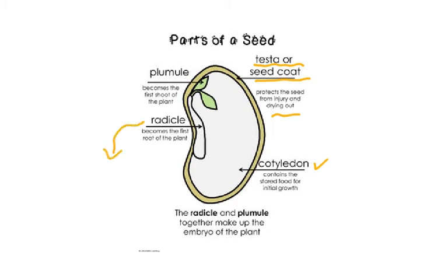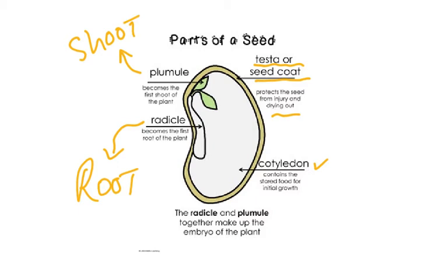A simple way to remember: the radicle is going to develop into the root — 'r' for radicle, 'r' for root. The plumule is going to become the shoot. The three main components are: number one, the testa or seed coat; number two, the cotyledons; and number three, the radicle. The radicle and the plumule together make up the embryo of the plant.